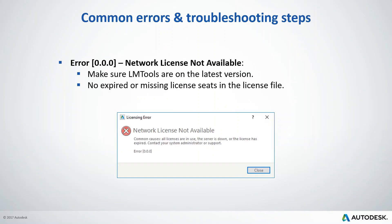Now we'll cover common errors and some troubleshooting steps for future reference. The first common one is Error 000. This error normally appears either because you are not using the latest version of LMTools, or your license was not updated with the latest package information. If you're launching products like AutoCAD 2020 and seeing this error, it is most likely caused by an outdated LMTools version.